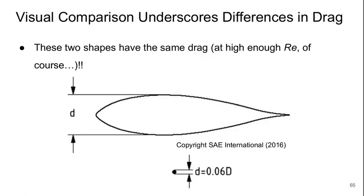This is a really nice visual comparison to underscore the differences in drag between bluff and streamlined bodies. So at some high enough Reynolds number, these two shapes, which are shown to scale, have exactly the same drag force acting on them.